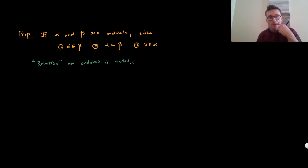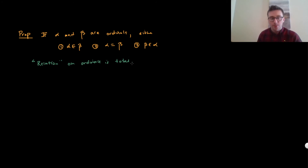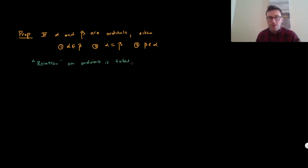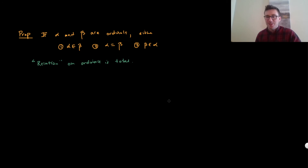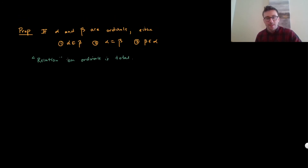Why put 'relation' in air quotes? The next thing we're going to do follows from our previous discussions: there's actually no set of all ordinals — that's the Burali-Forti paradox, which we'll do after this proposition. Formally, a relation is a set, a subset of the Cartesian product. But if there is no set of ordinals, it doesn't make sense to call this a relation. More of a technical point, but morally it is a relation, and what we argue is that it's total.